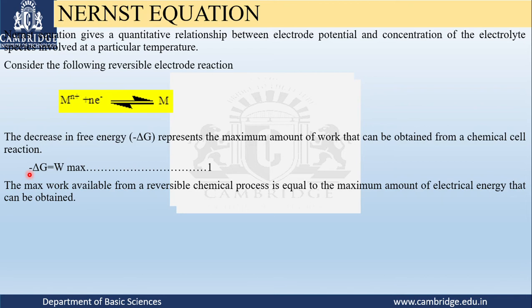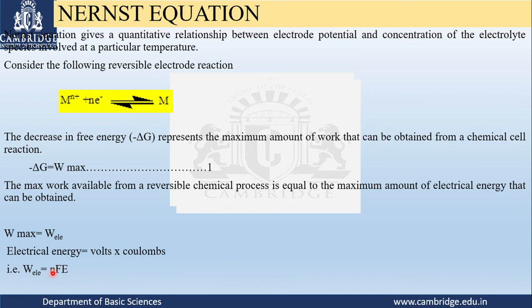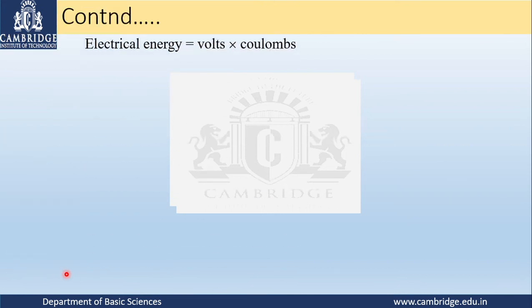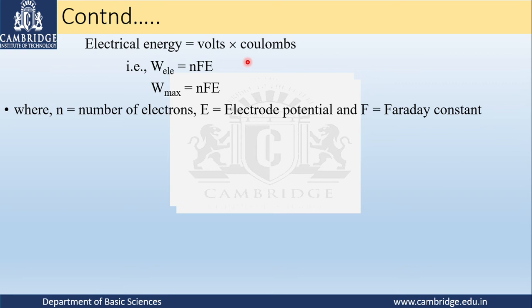The work done in a redox reaction is minus n E F. In a redox reaction the work done is electrical energy, which is given by the number of volts multiplied by the number of coulombs, where n is the number of electrons released, F is the Faraday constant, and E is the electrode potential of that particular metal. Therefore, delta G equals minus n E F. W-max equals n E F, and delta G equals minus n E F. Similarly, at standard conditions, the decrease in free energy is given by delta G-naught equals minus n E-naught F.